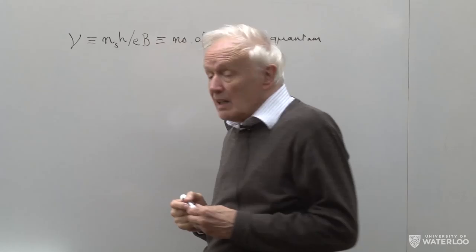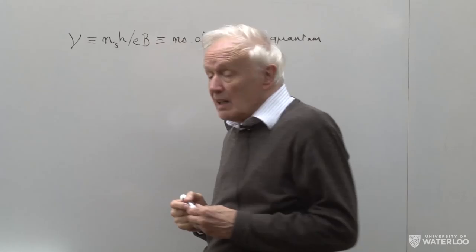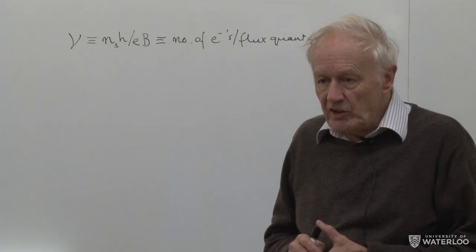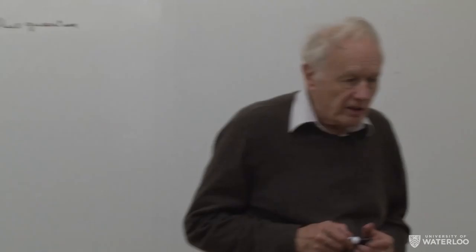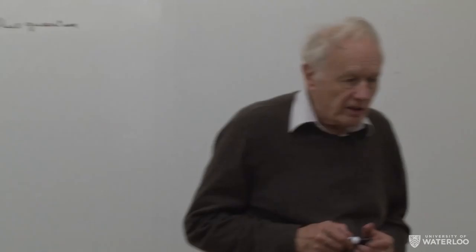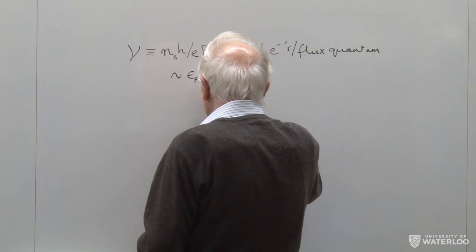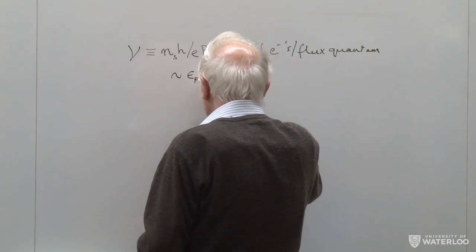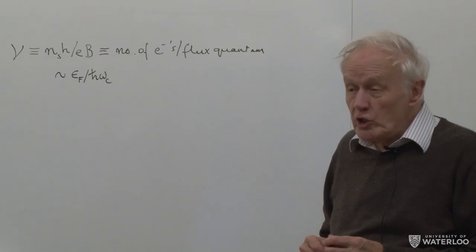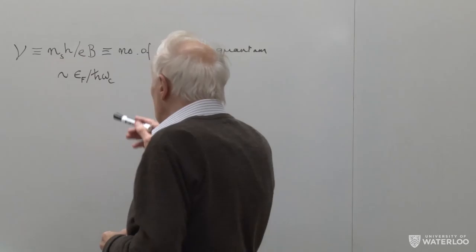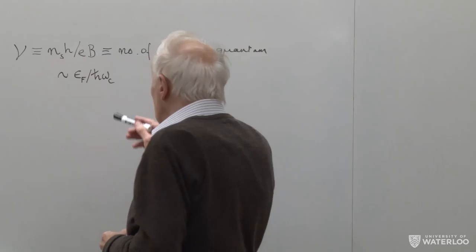Very typically, when dealing with the quantum Hall effect, you're interested in cases where ν is of order one. This is in strong distinction to traditional condensed matter physics, where ν is of the order of 10³ or 10⁴. Remember that ν is also of the order of the Fermi energy divided by the cyclotron energy. Typically in Shubnikov-de Haas effects this is 10³ or 10⁴, so you're not in the quantum Hall regime.